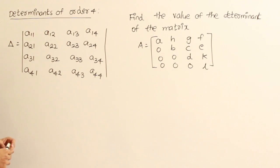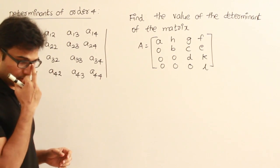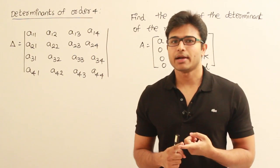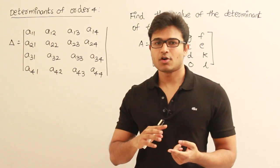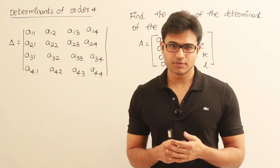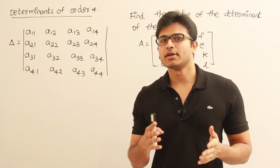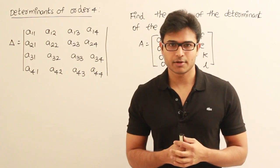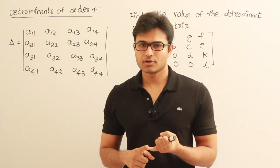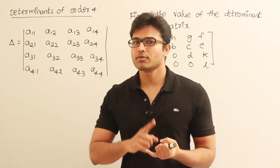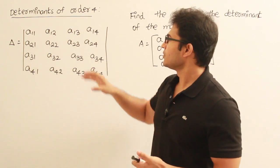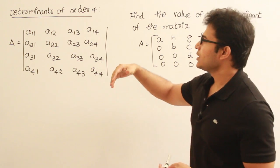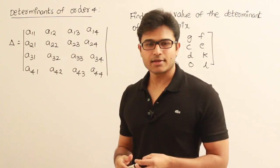Now let's find the determinant of order 4, which means a 4 by 4 matrix. Remember, we can find out the determinants of only square matrices. If a matrix is not square — not n by n — if it is something rectangular like n by m, we cannot find out the value of the determinant. So we can find determinants only for square matrices. Here I am giving you the example of a 4 by 4 matrix, and you can generalize it to any square matrix of any size.